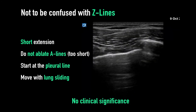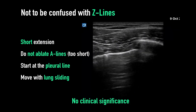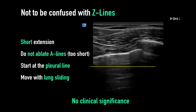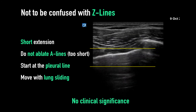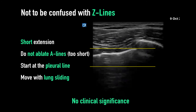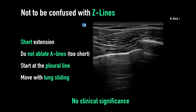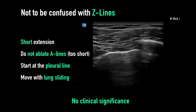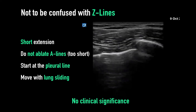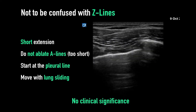There are other lines that can be confused with B-lines. These are called Z-lines. They are very short — they go from the pleural line but don't extend to the far field. They also don't ablate A-lines, but they do move with lung sliding. These lines are yet to be of determined significance at this point in time.